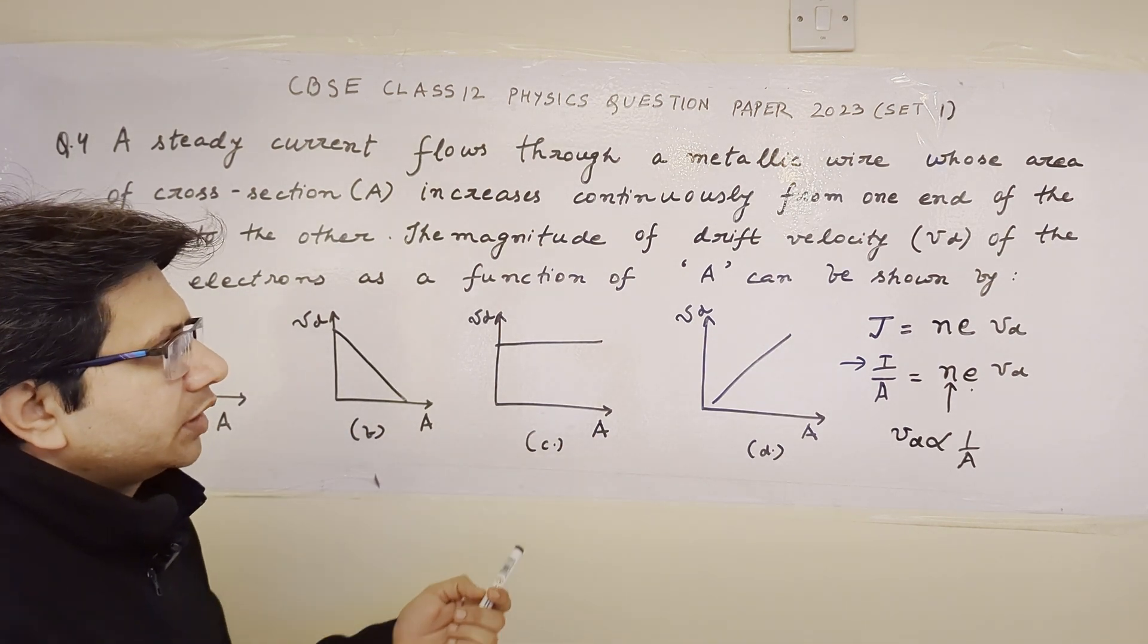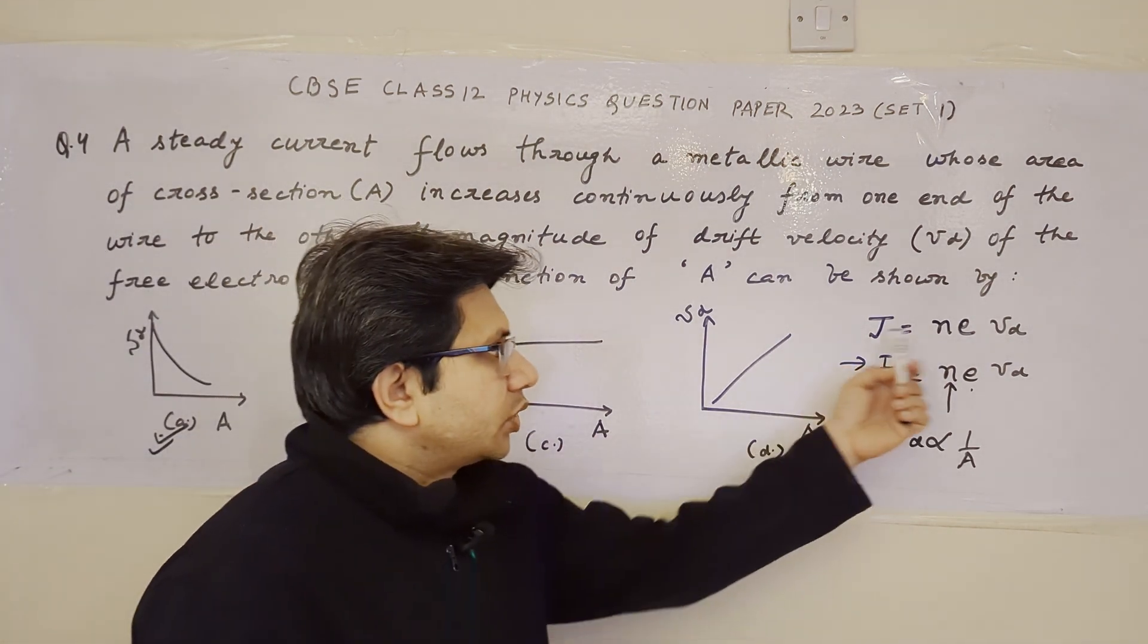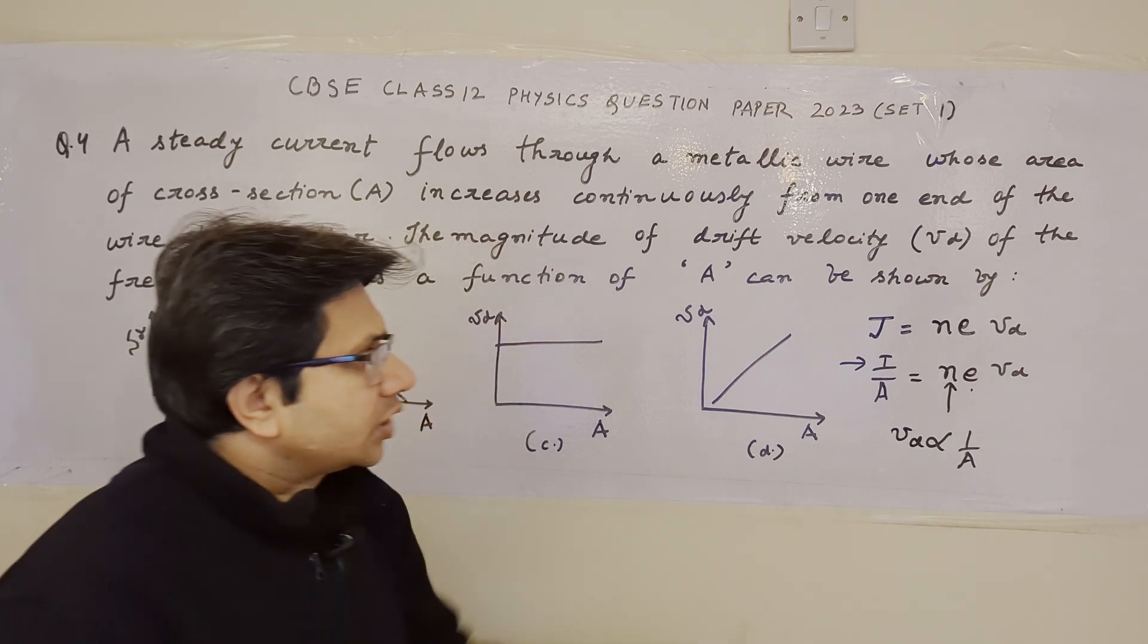We have to solve using the key concept of the relationship between the current density and the drift velocity. The current density is I upon A, current per unit area.